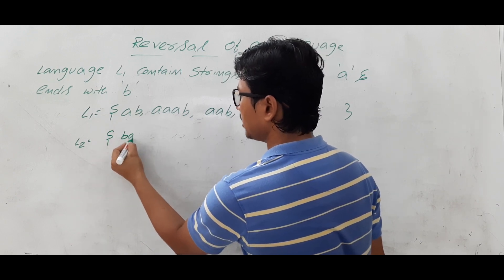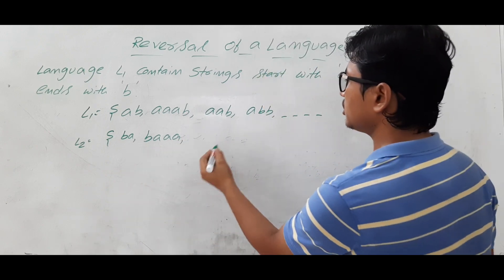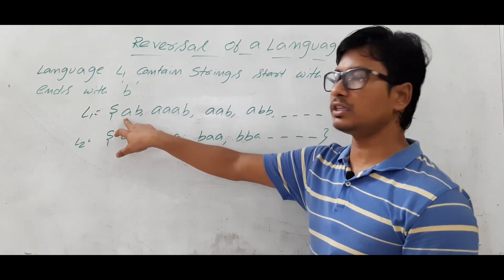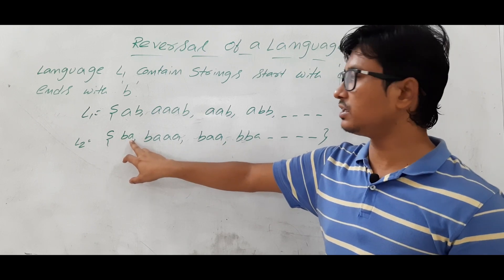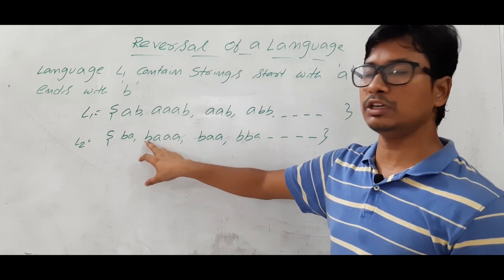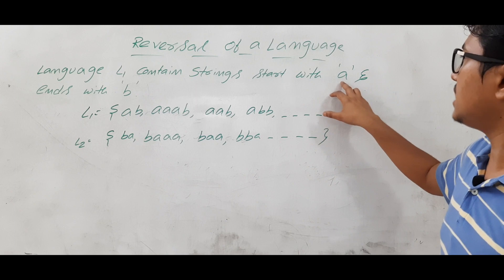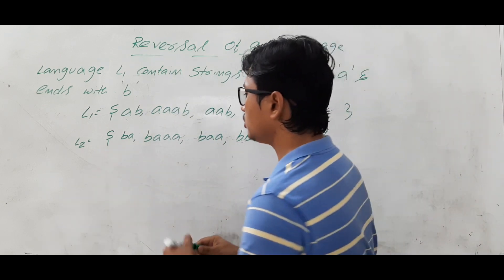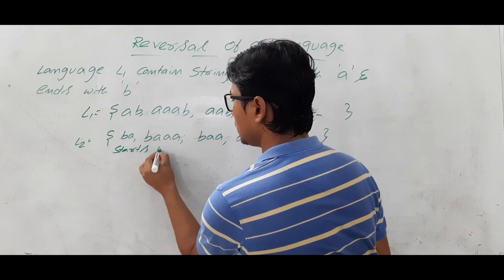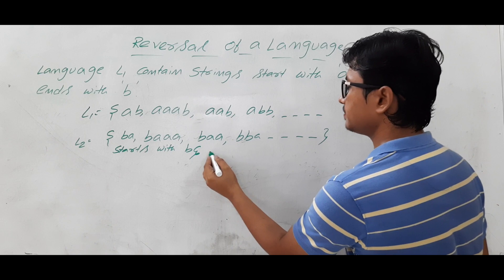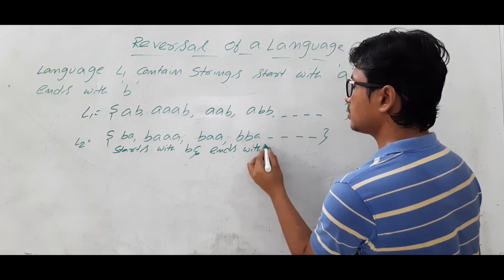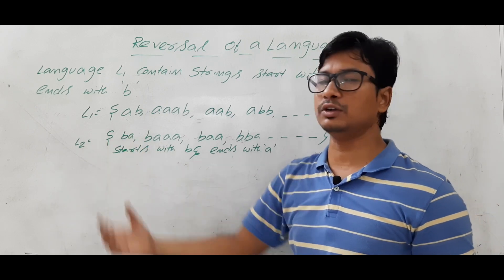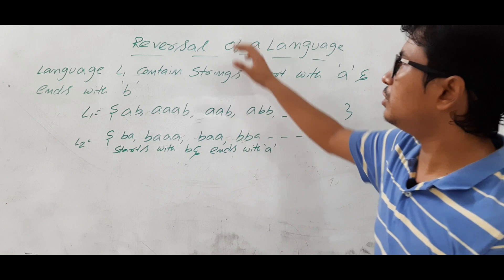The reversal of string AB is BA, the reversal of AAB is BAA, and the reversal of BAAB is BAAB reversed to BAAB — so on. If L1 strings start with A and end with B, the reversed strings start with B and end with A. So language L2 starts with B and ends with A. This is the reversal of language L1.